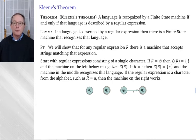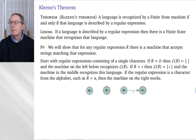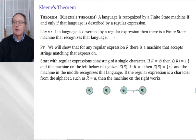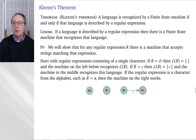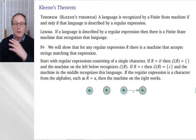We broke the proof into two halves: one half says if the language is described by a regular expression, then there's a finite state machine; the second half says if there's a finite state machine, then there's a regular expression. Both halves are constructive — meaning if you give me the regular expression, I can give you the finite state machine, and the argument will go through how to do that.